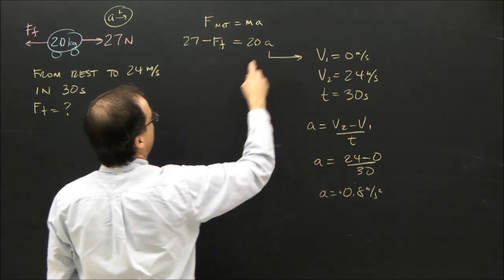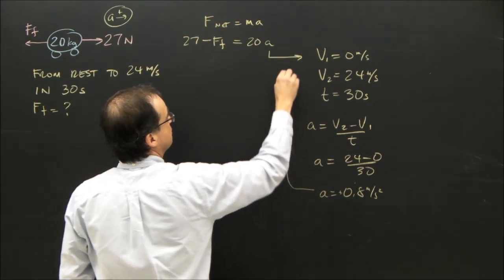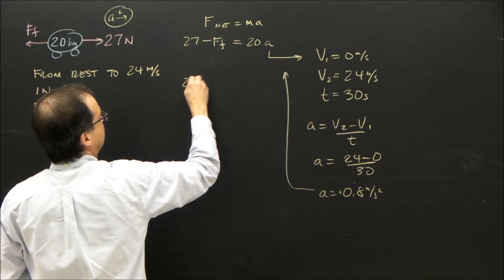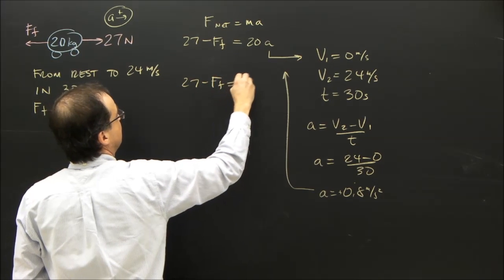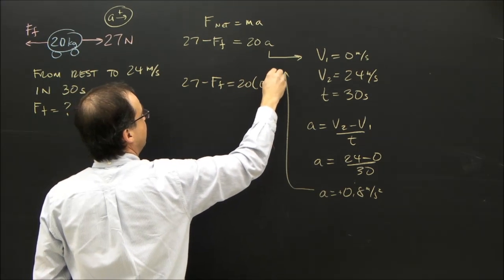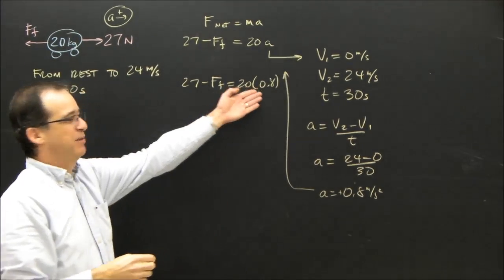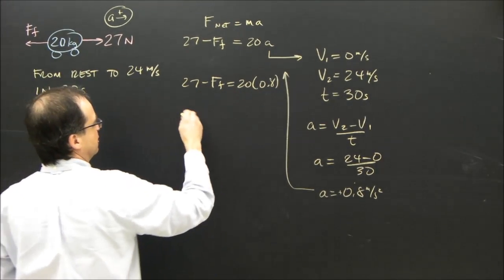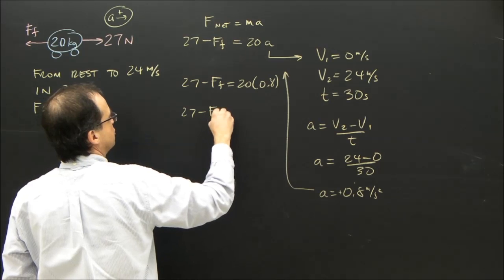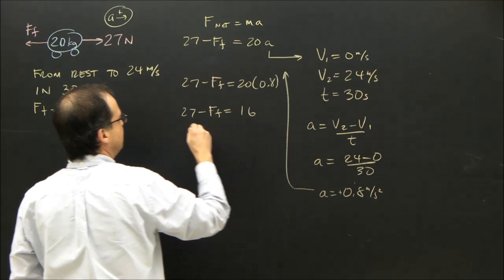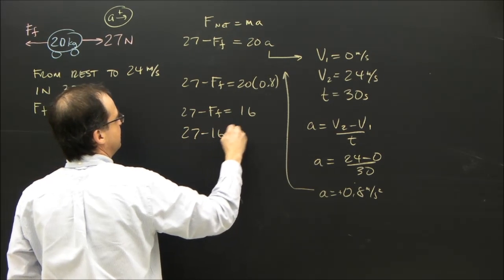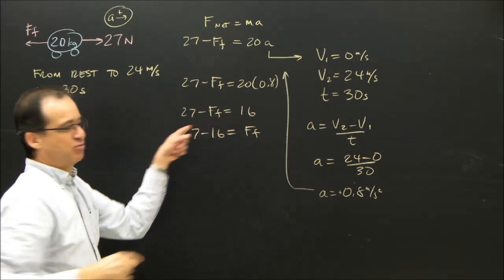So then I can plug that back in here, and say 27 minus force of friction equals 20 times 0.8. And just like I did in the other problem, I made the acceleration the same, so the numbers will work the same. 27 minus force of friction equals 16. 27 minus 16 equals force of friction. I just rearranged that.